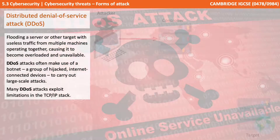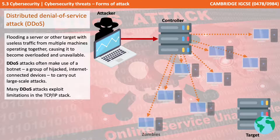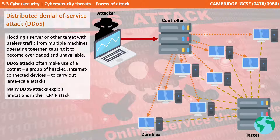A distributed denial of service attack, or DDoS, involves flooding a server or other target with useless traffic from multiple machines operating together, causing it to become overloaded and unavailable. DDoS attacks often make use of a botnet — a group of hijacked internet-connected devices — to carry out large scale attacks. Many DDoS attacks exploit limitations in the TCP/IP stack.